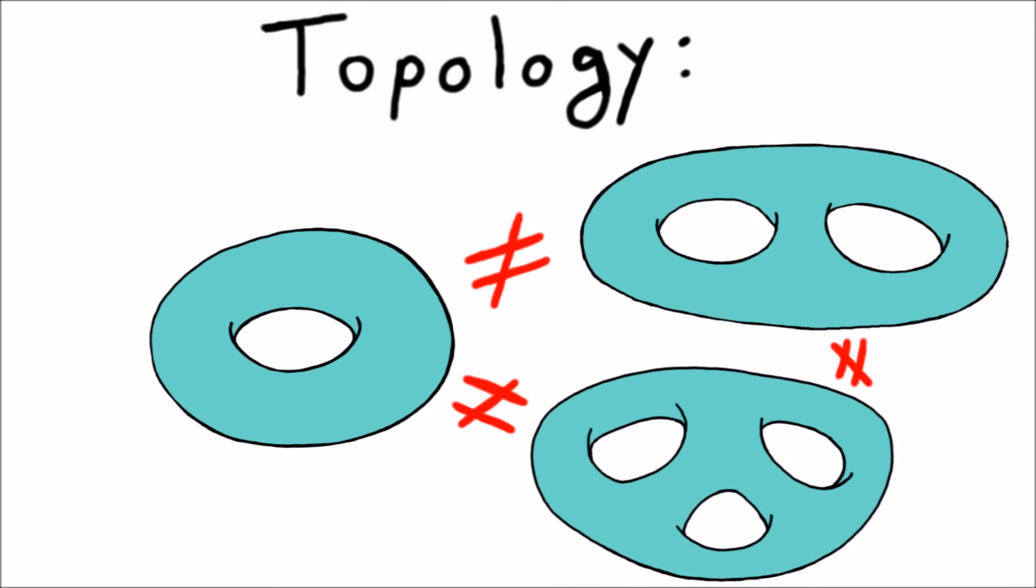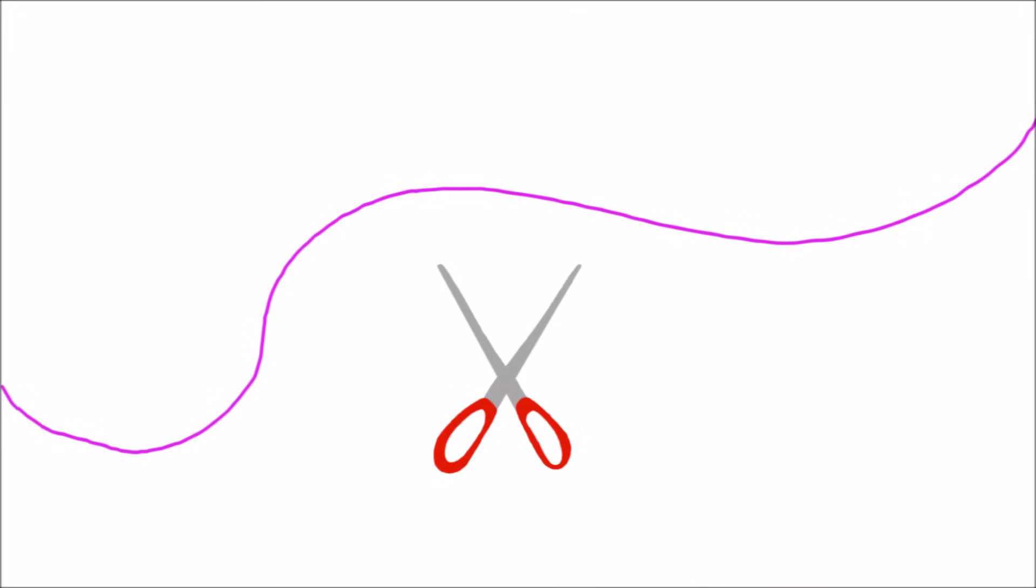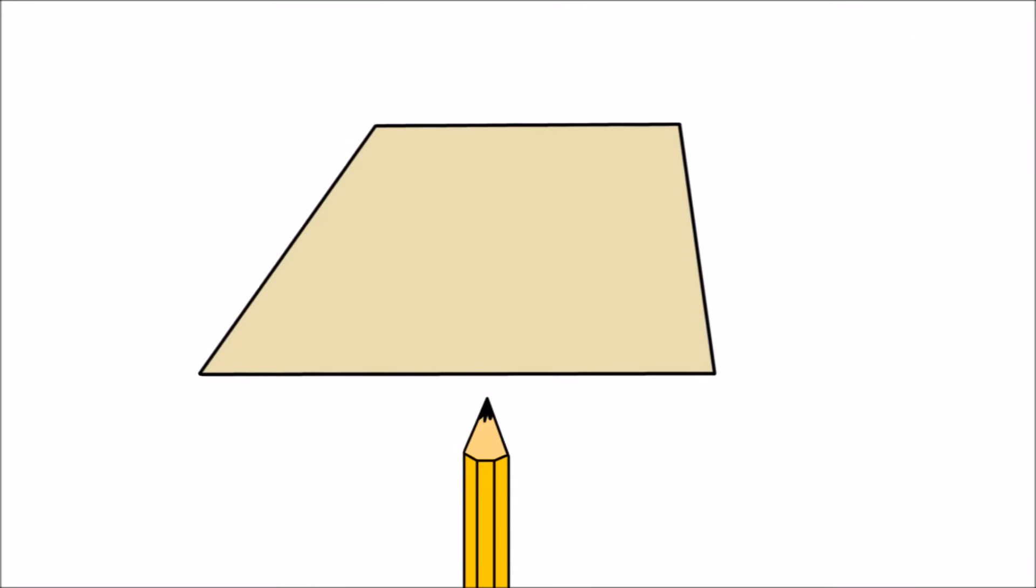We can also distinguish between a donut and some kind of ultra delicious donut with two holes or three. We can also distinguish between different kinds of holes, because holes behave differently in different dimensions.